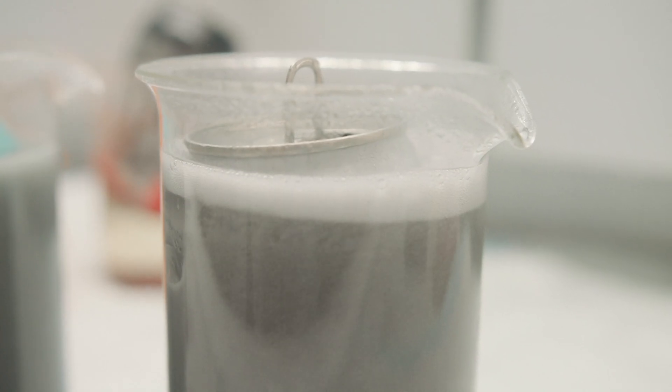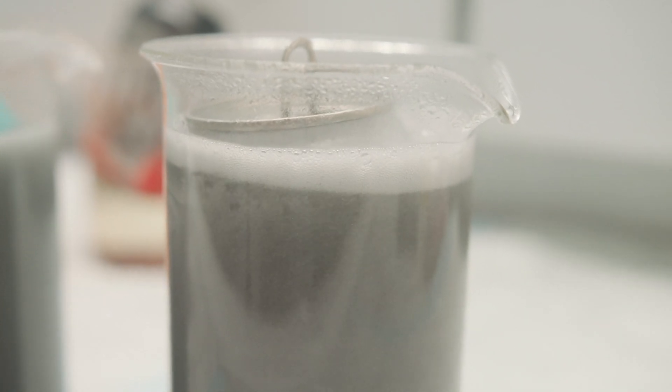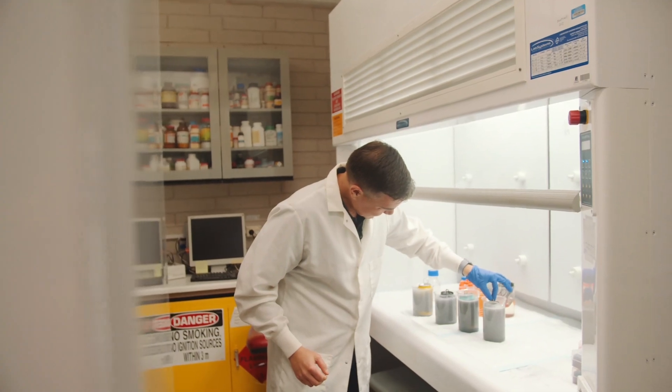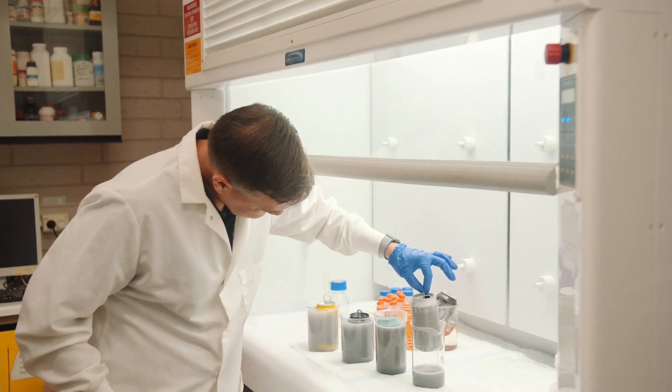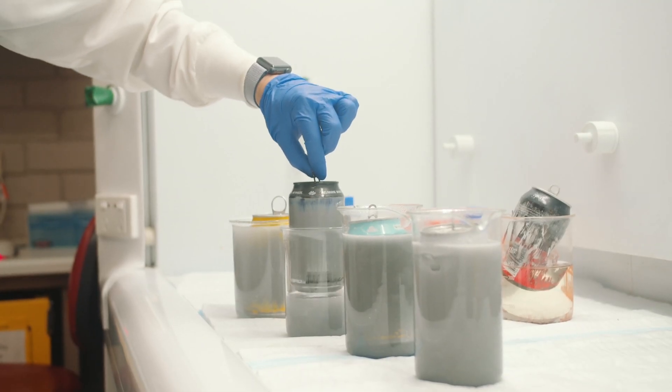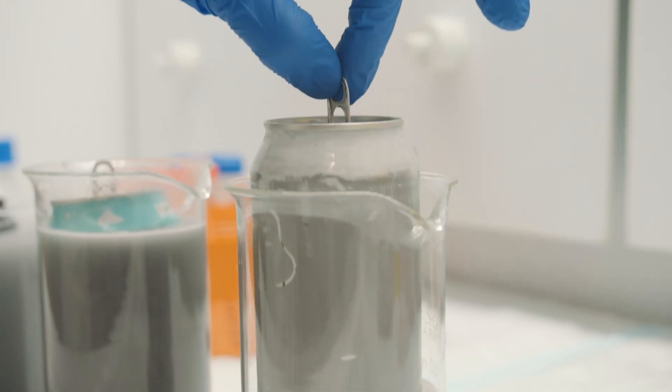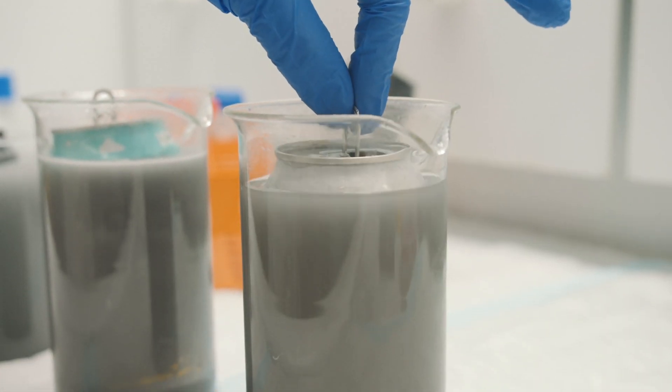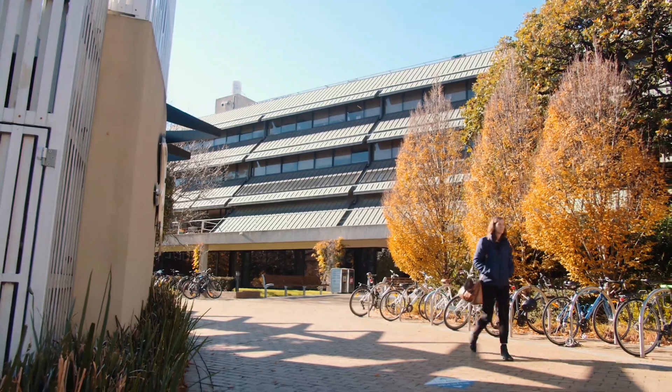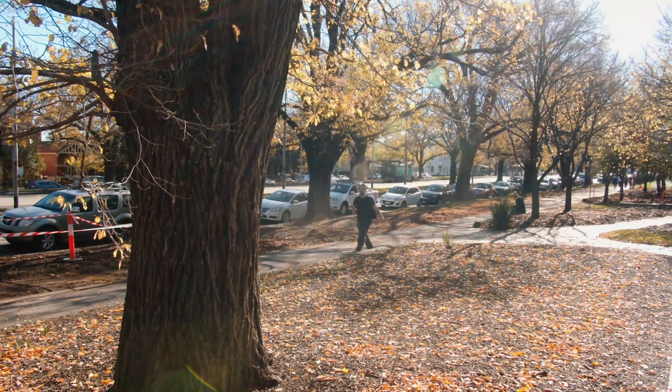A number of different surveys have looked at the level of BPA in beer and it's actually quite high compared to other beverages that you might consume from a can. The bad thing about BPA is it's actually one of the chemicals that we call an endocrine disruptor, which actually interferes with the way the hormones work in our body.